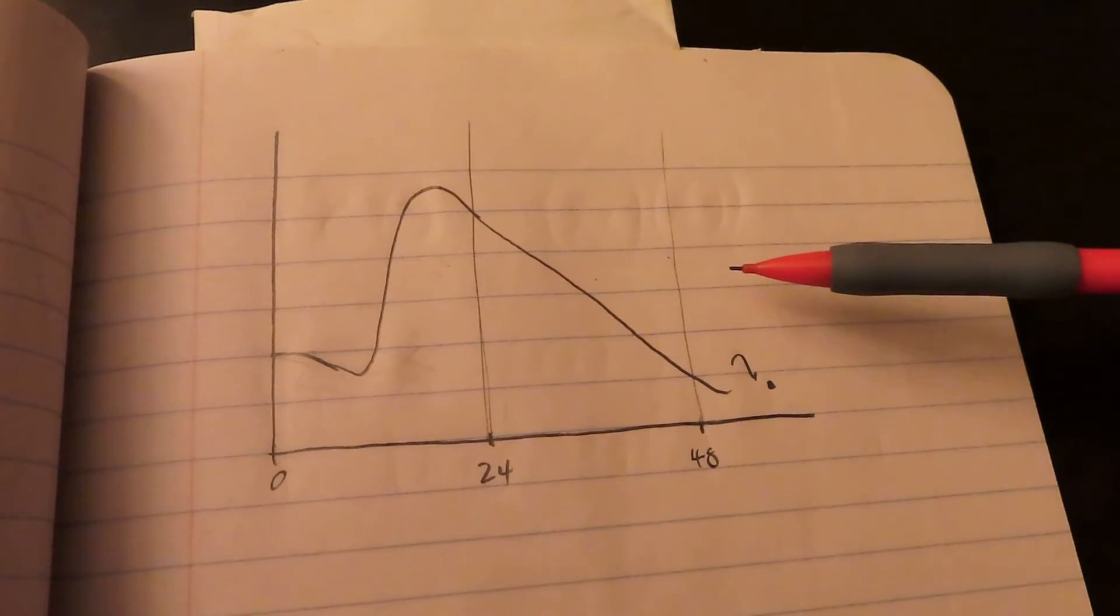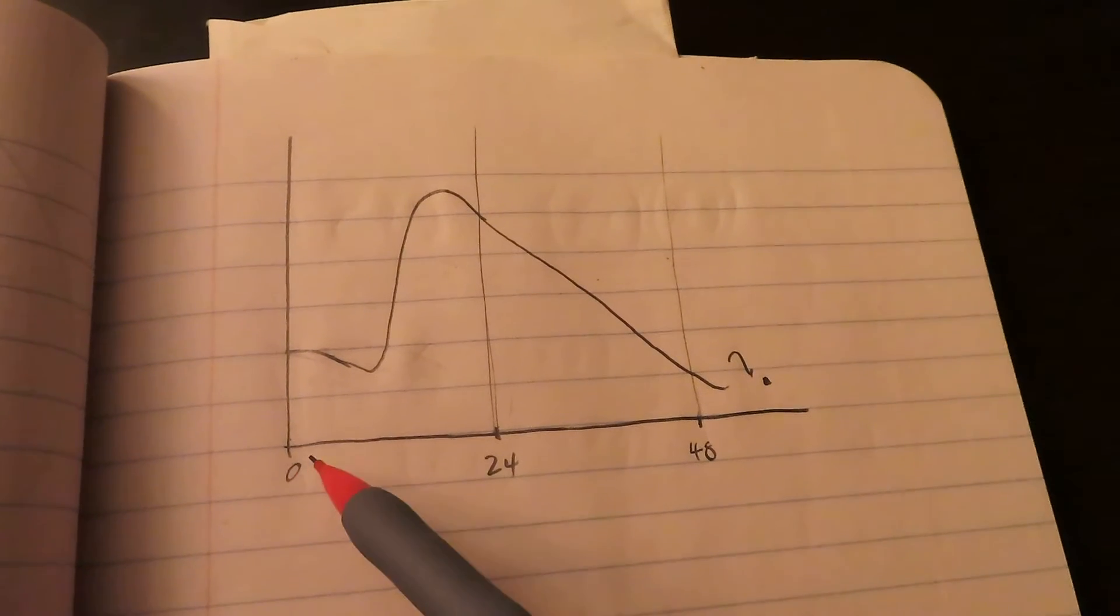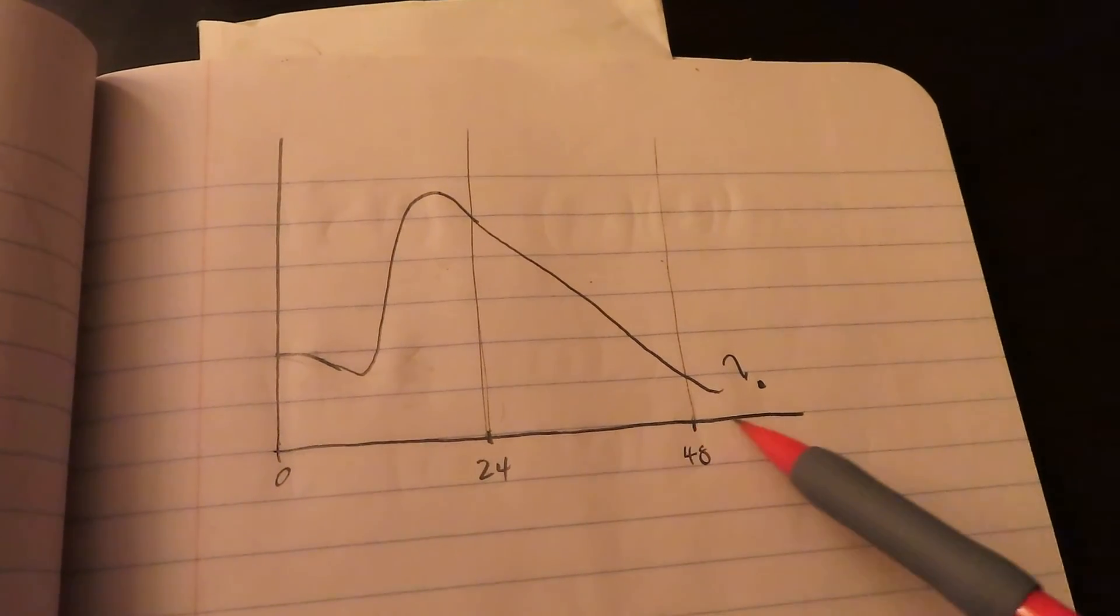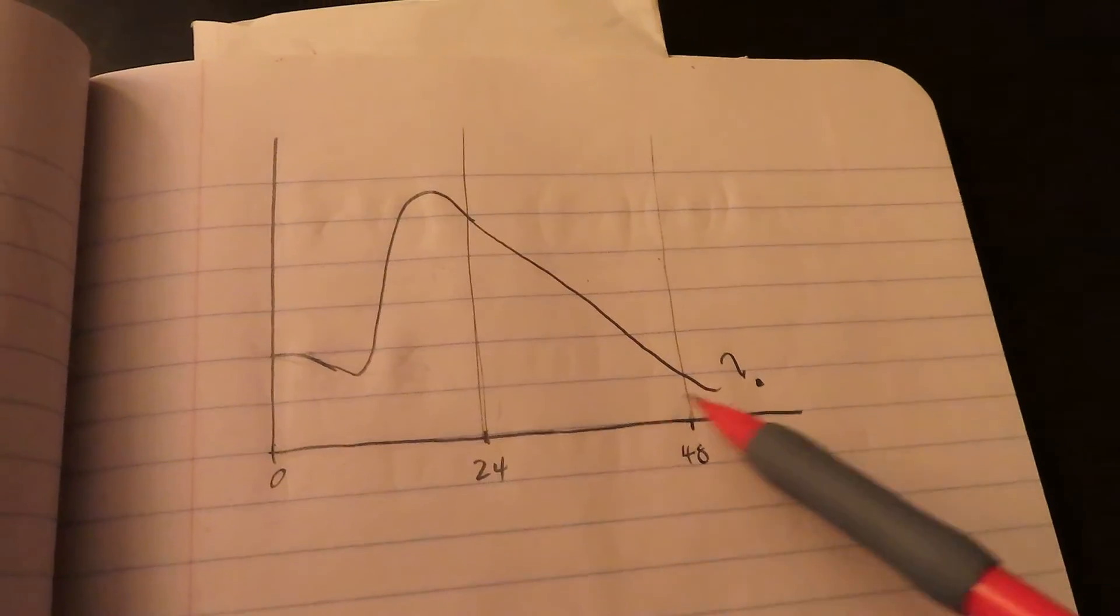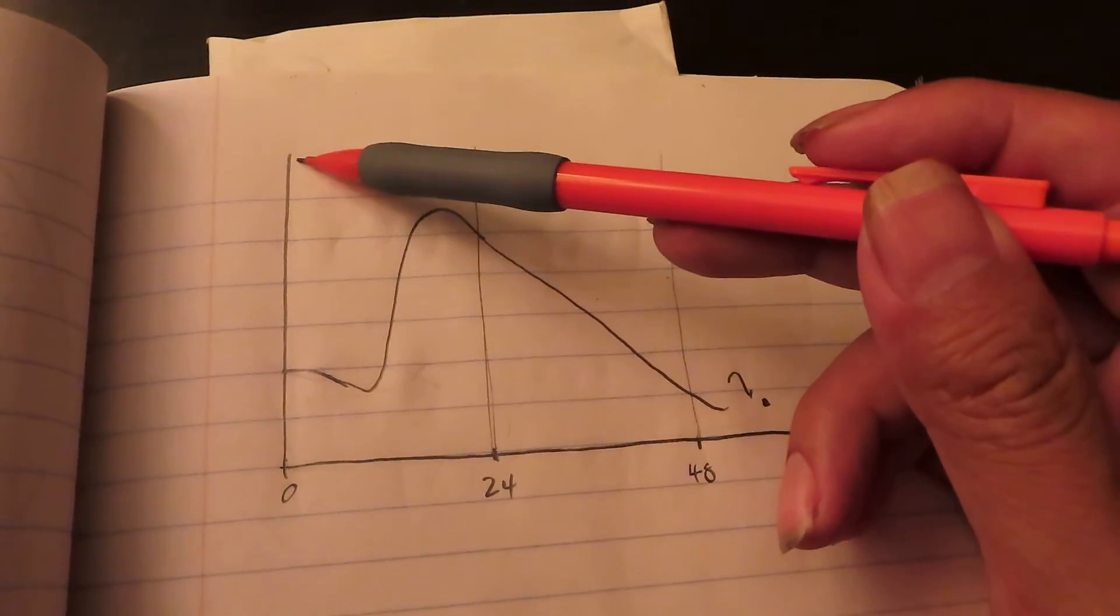It all comes to this little graph, which is a plot of how many hours I have been fasting, how many hours since my last meal versus my happiness level.